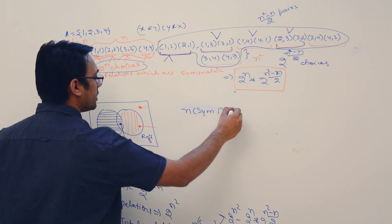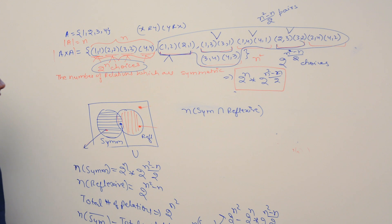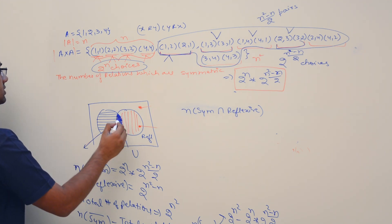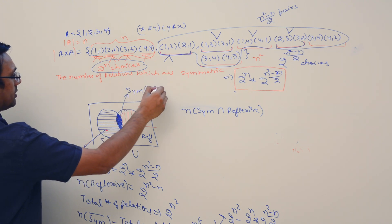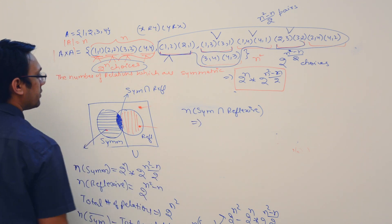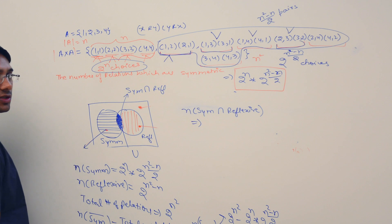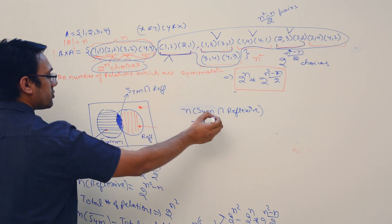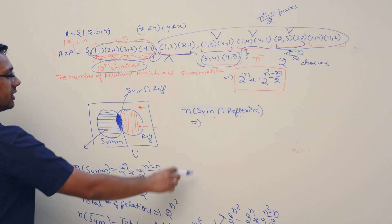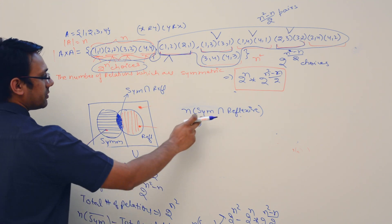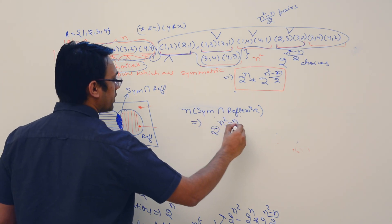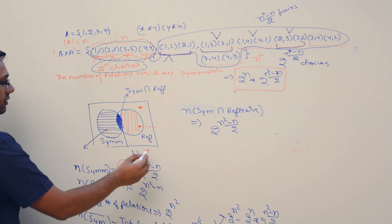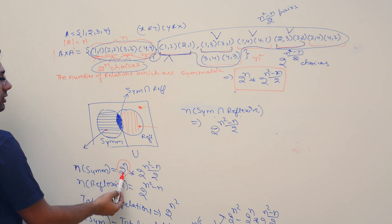The number of relations which are symmetric as well as reflexive: for a relation to be symmetric, we have choices for diagonal and off-diagonal pairs. But if a relation must also be reflexive, then all diagonal elements must be included — we don't have a choice for them. So the number of relations which are symmetric as well as reflexive is 2^((n² − n)/2).